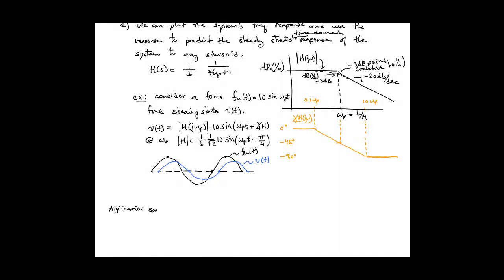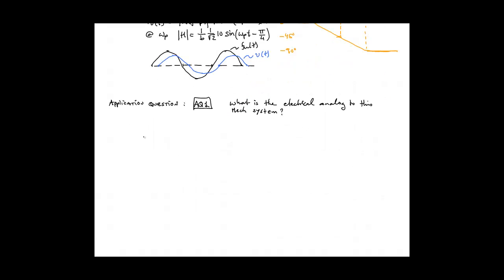Now let's look at two application questions. First, what is the electrical analog to the mechanical system of problem E1? Well, let's begin by listing the elements, mechanical elements, from problem E1 and finding their electrical equivalent. So the mass's analog is the inductor. The viscous damper's analog is the resistor. The effort or force source has an analog of a voltage source.